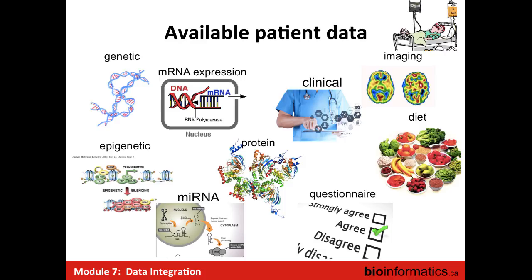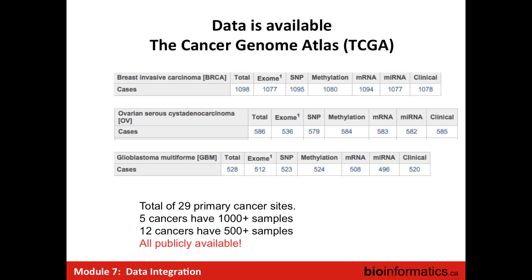This data is not just sitting in hospitals; some of it is publicly available. The best repository, to my knowledge, is the Cancer Genome Atlas, where for the same set of individuals you will have exomes, SNP data, methylation, mRNA, and microRNAs. Taking the overlap of all this data, it may be available in over 500 patients — large enough cohorts to start playing with and understanding different integrative methods.